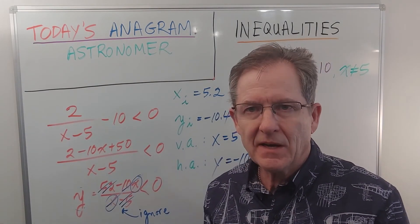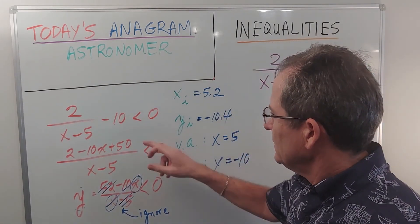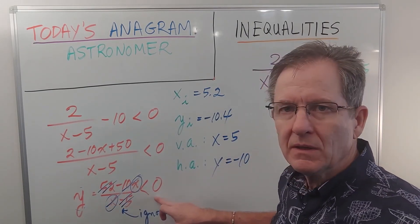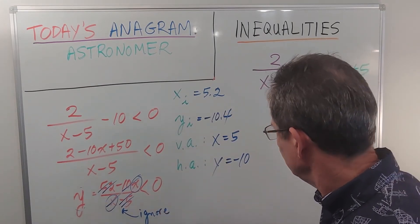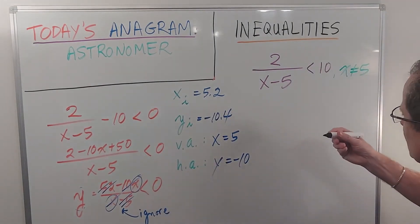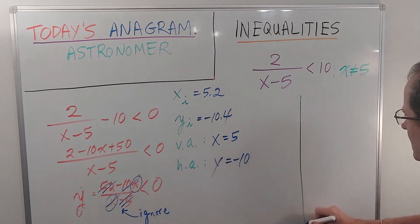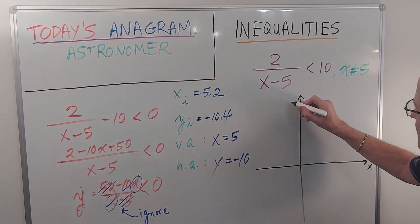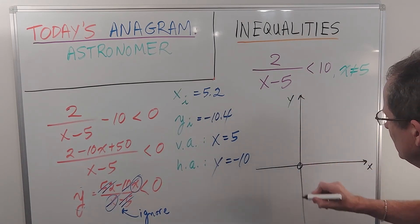Alright, with that information, let's graph it and then solve this inequality. We want to know where the function or the graph is below the x-axis. So let's do that over here. This is the x-axis, this is the y-axis, this is the origin.